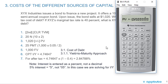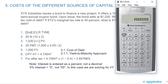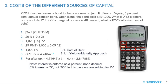For the coupon payment, be careful at semi-annual: 1,000 face value times 5% equals $50 per year, but divide by 2 because it's semi-annual, giving $25. Enter that as the payment. The future value is the face value — enter 1,000 as the future value.